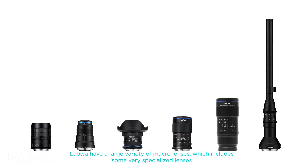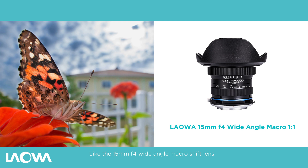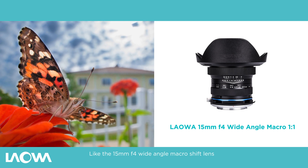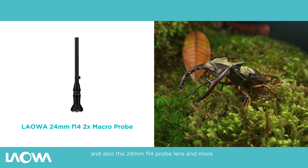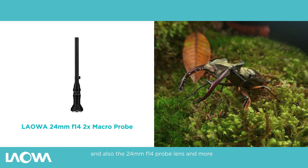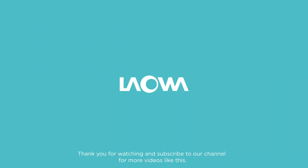Laowa have a large variety of macro lenses, including some very specialized options like the 15 millimeter f/4 wide angle macro shift lens and the 24 millimeter f/14 probe lens, and more. Check out all the lenses on venuslens.net. I hope you learned something from watching this video — thank you for watching, and subscribe to our channel for more videos like this. This was Shongda, and I'll see you next time.